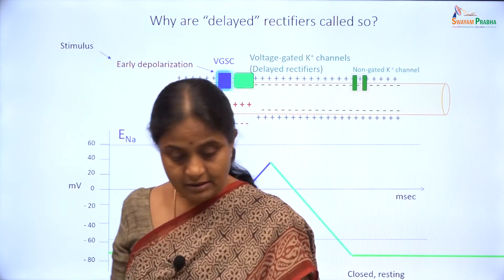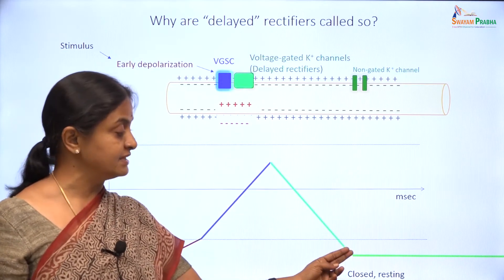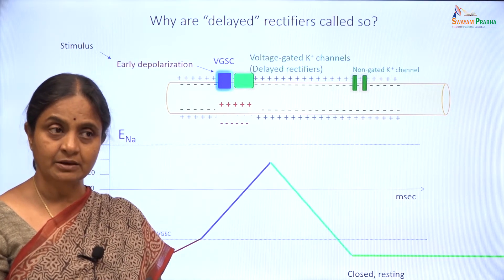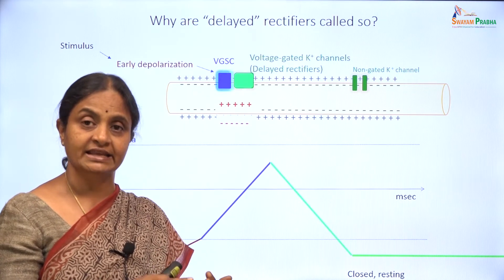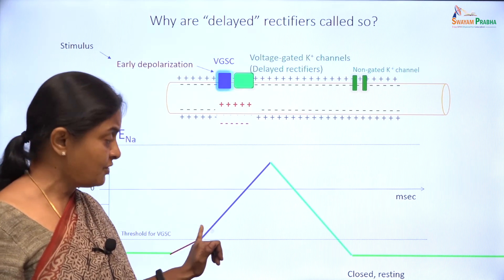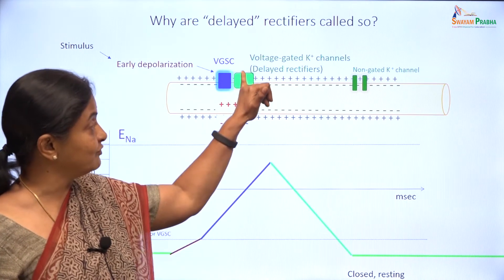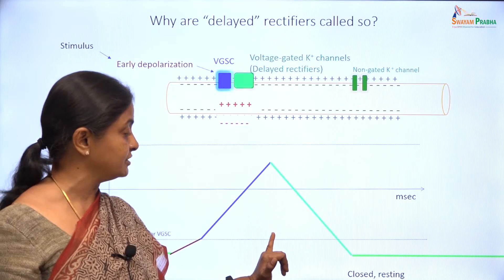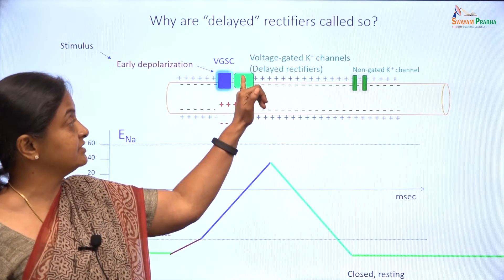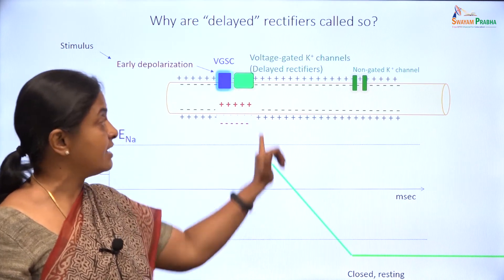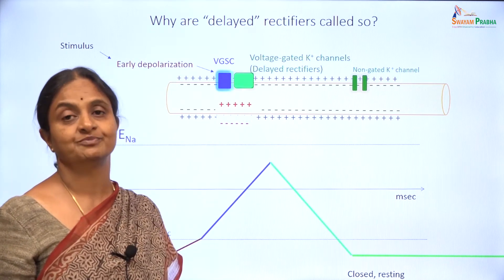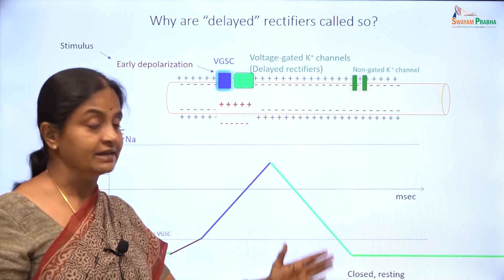We will now see a little bit about the channels which repolarize the membrane quickly — the delayed rectifiers. Why are they called delayed rectifiers and why are they voltage gated? And what is the voltage that gates them? The same type of depolarizing voltage which opens voltage gated sodium channels can also open the voltage gated potassium channels, but after a delay. The voltage gated sodium channels open immediately after the depolarizing step but the delayed rectifiers open after a delay, and therefore they are called delayed rectifiers. Because of the delay, they allow the membrane to move to a positive potential — they allow the action potential to develop and then quickly abbreviate it.